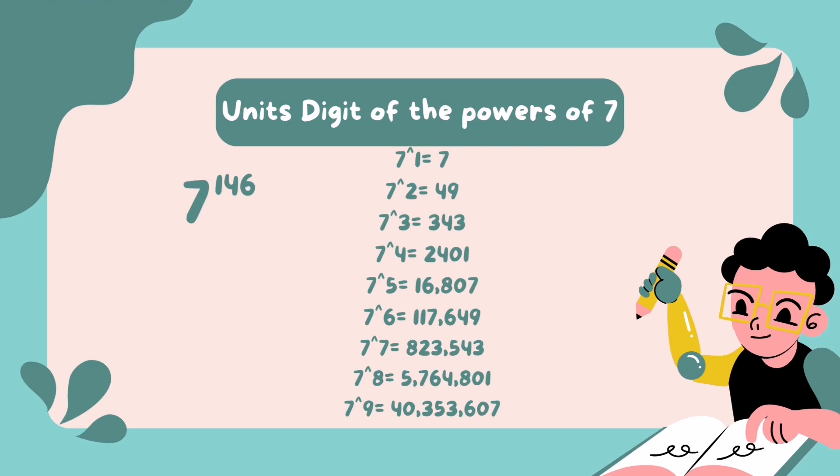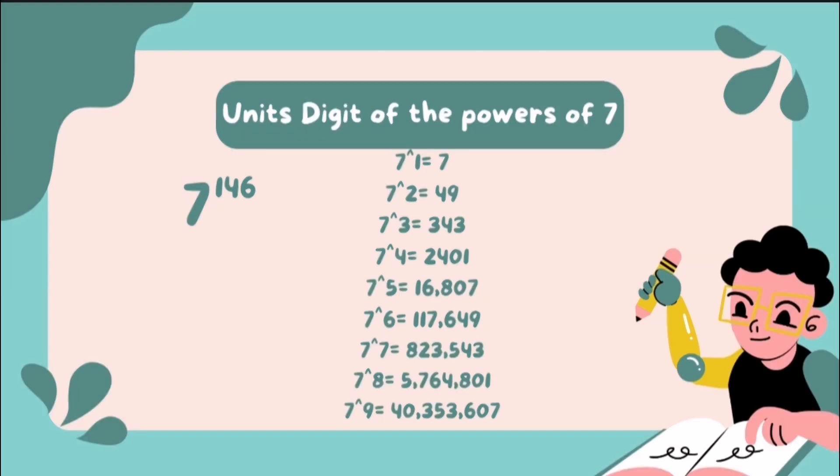Let's examine the unit's digit of the powers of 7. 7 raised to 1 equals 7. 7 raised to 2 equals 49. 7 raised to 3 equals 343. 7 raised to 4 equals 2,401.